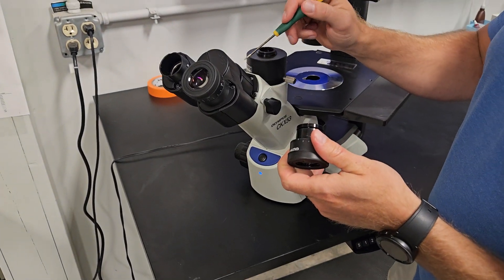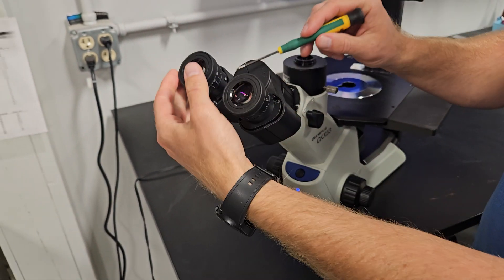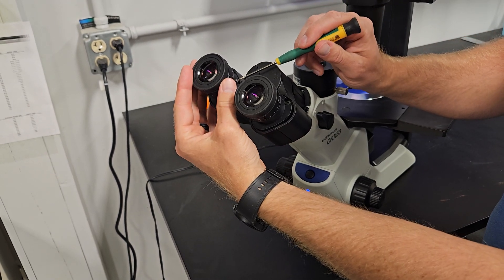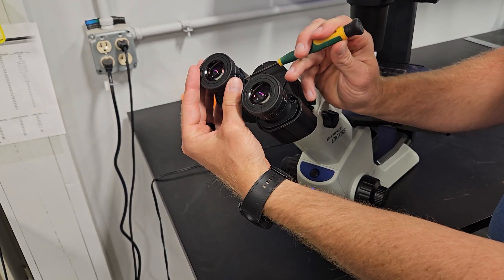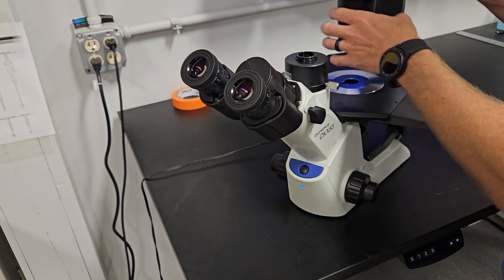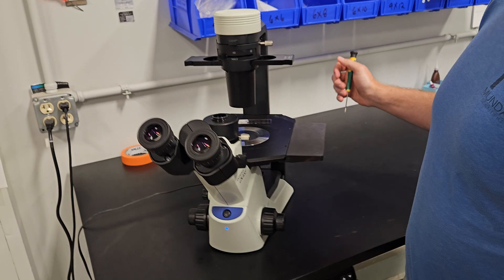we'll either take this off or we'll take the eyepieces out. The eyepieces is a little easier for the end user to put back in than putting this head on and off or taking this head on and off. So we take the eyepieces out to ship it. And then we take this off to ship it typically. So that's it on this scope.